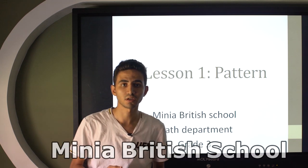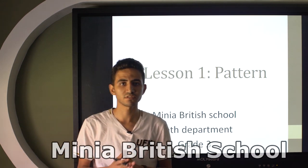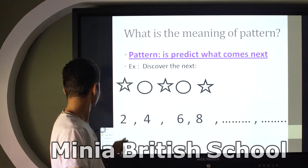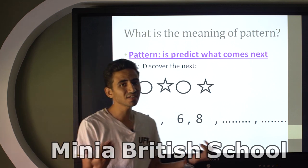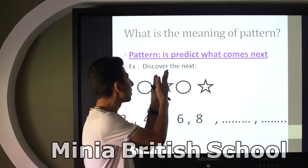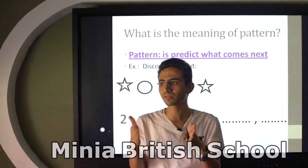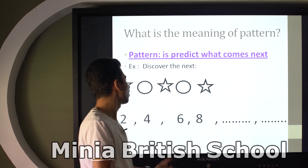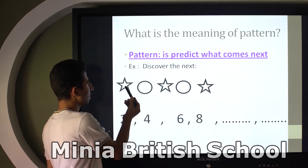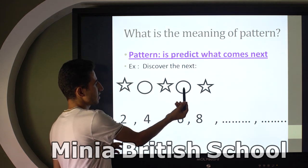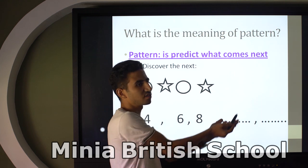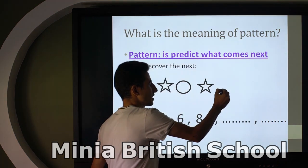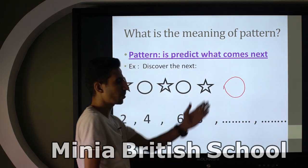Good morning, Grade 3! How are you today? Let's start our lesson in Grade 3. The first lesson is talking about pattern. What is the meaning of pattern? Pattern here means to predict what is coming next. I know what is coming next. For example, here I have: stars, circle, stars, circle, stars. What is the shape after stars? Let's see — stars, circle, stars, circle, star — so the shape after stars is circle. Yes!